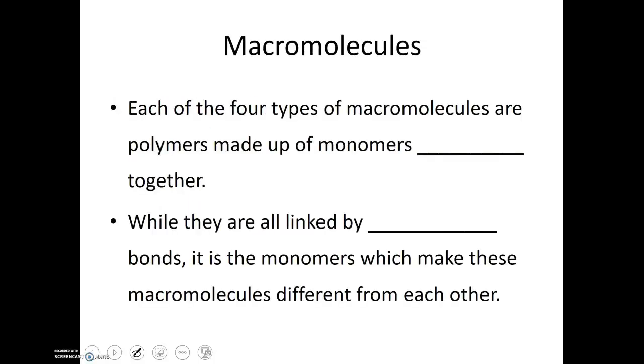Each of the four types of macromolecules are polymers made up of monomers linked together. While they're all linked by covalent bonds, it is the monomers which make these macromolecules different from each other.